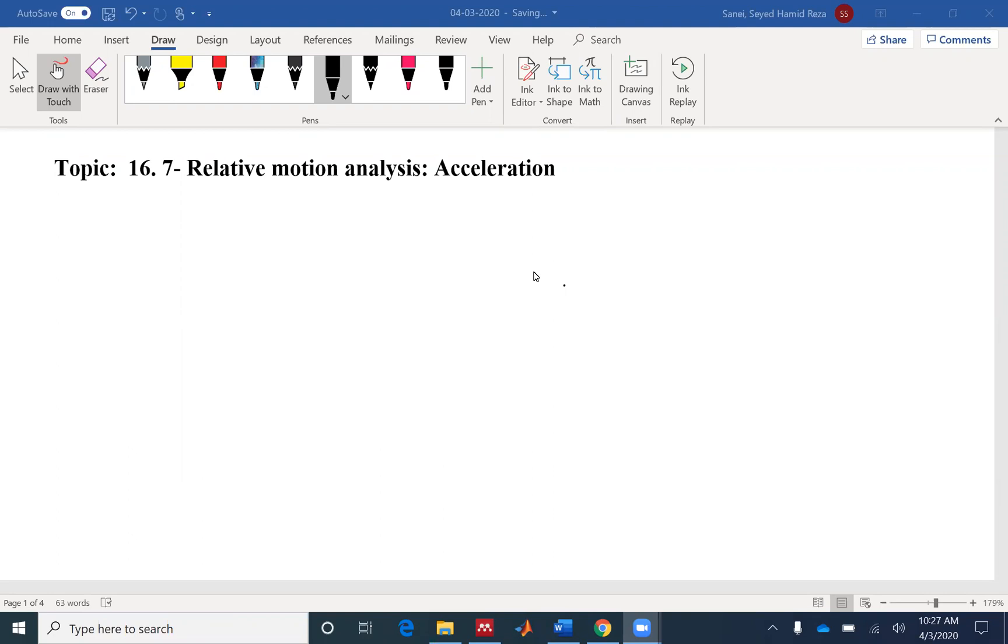We talked about the relative analysis for the velocity, so VB is the same as the velocity of point A plus the relative velocity between the two points.